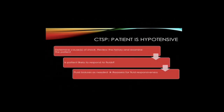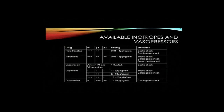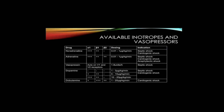If you are called to see a patient who is hypotensive, first review the history and examine the patient to determine the possible causes. Determine if the patient would likely be responsive to fluids and administer accordingly, then reassess for fluid responsiveness following a fluid bolus. This is a quick overview of the available inotropes and vasopressors commonly used in our ICUs, along with the mode of action, dosing, and common indications. These will need to be run through central lines.